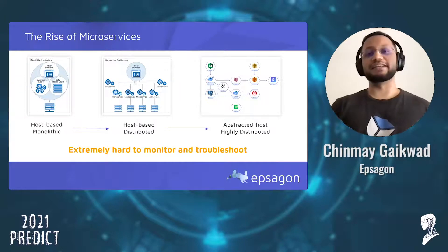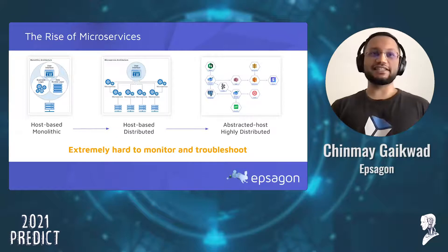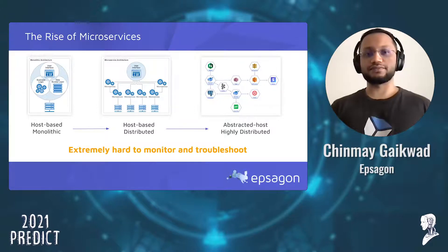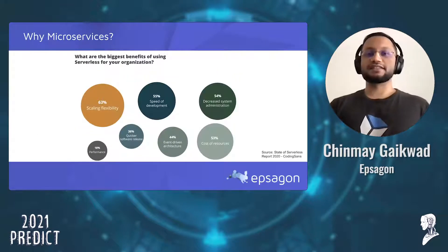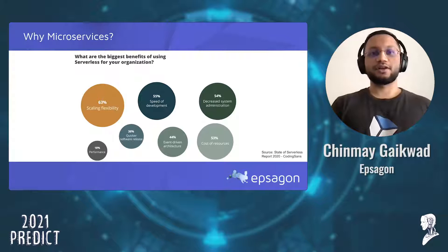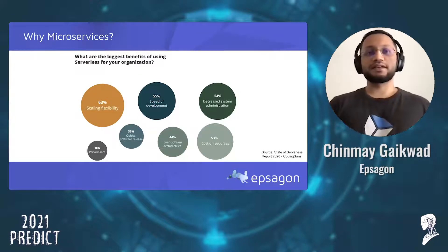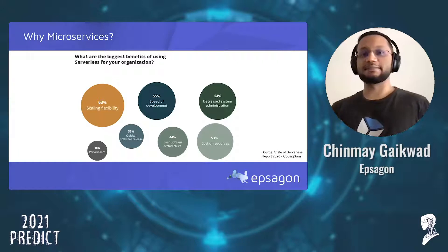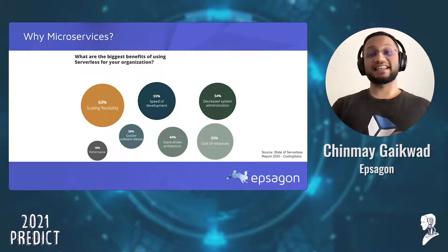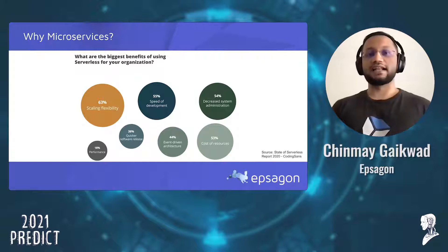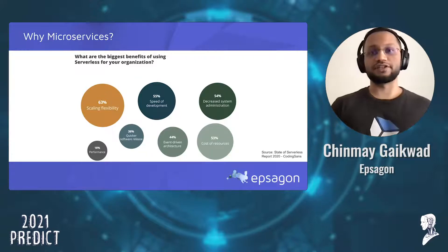Microservices architecture obviously has great benefits. However, these easy-to-depict architecture diagrams started to become much more complex because of microservices, which has brought about unique challenges. According to a 2020 report, scalability, speed of development, and decreased system administration time are the top reasons enterprises are moving to microservices. Scaling microservices is extremely easy and can be done in seconds, and it definitely increases your speed of development and allows you to utilize resources much more efficiently.